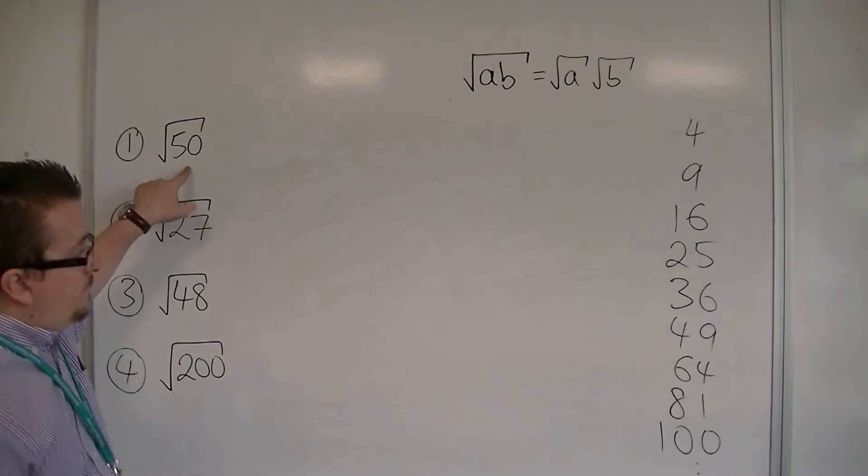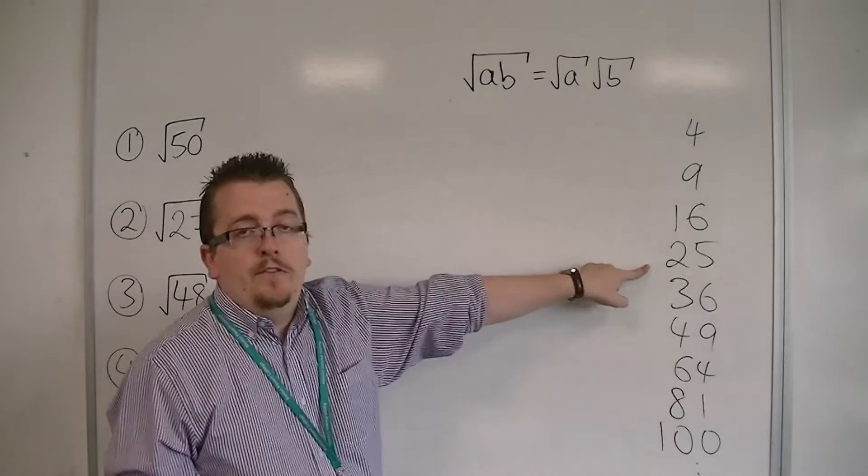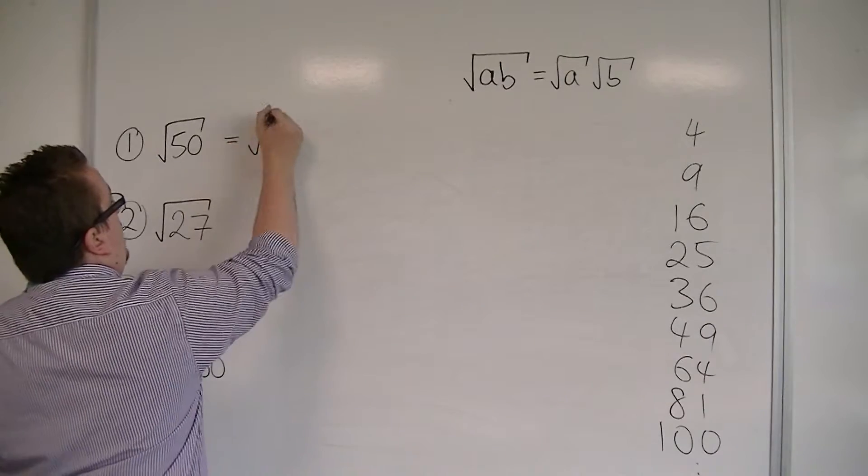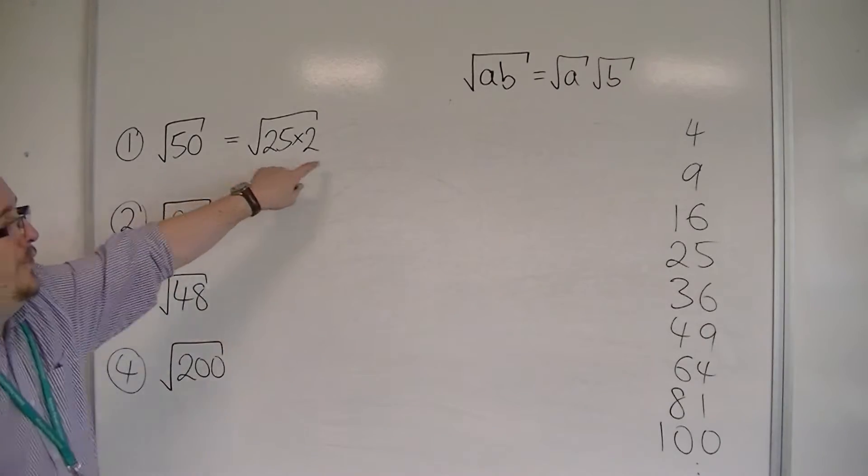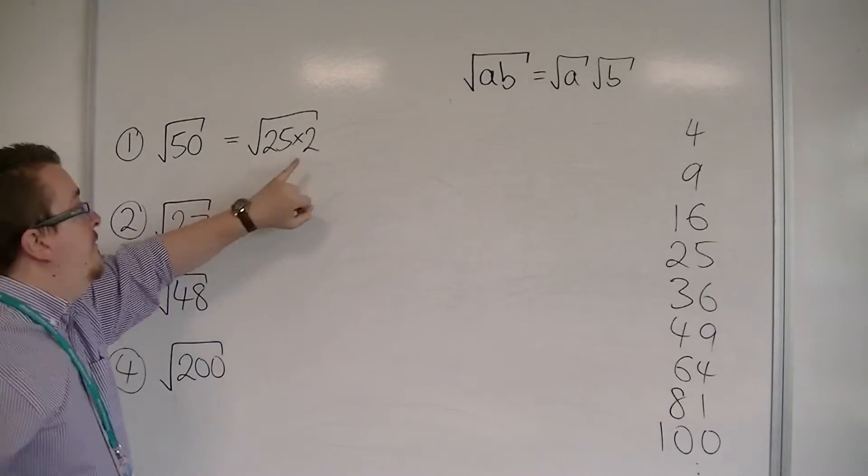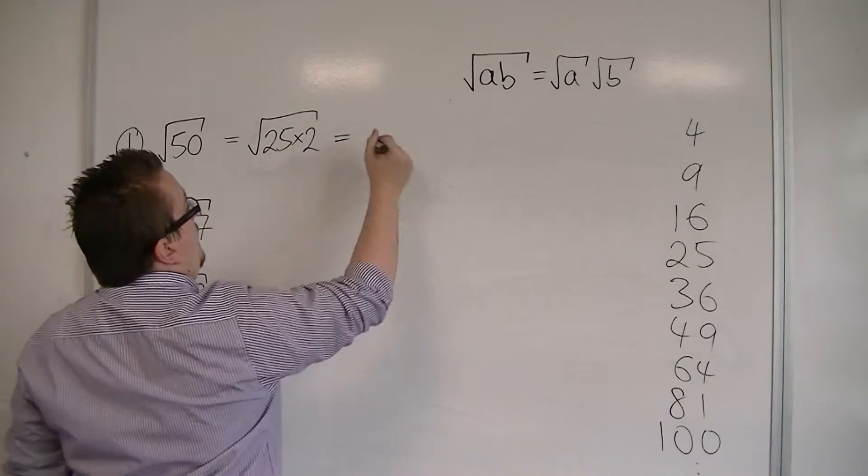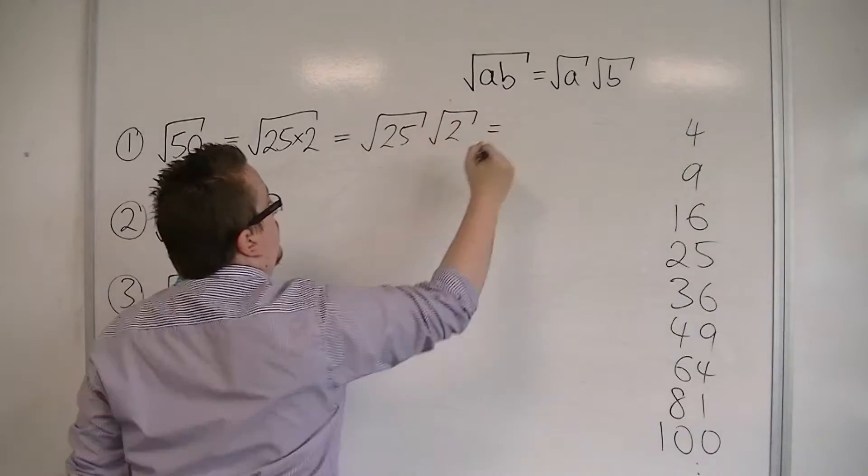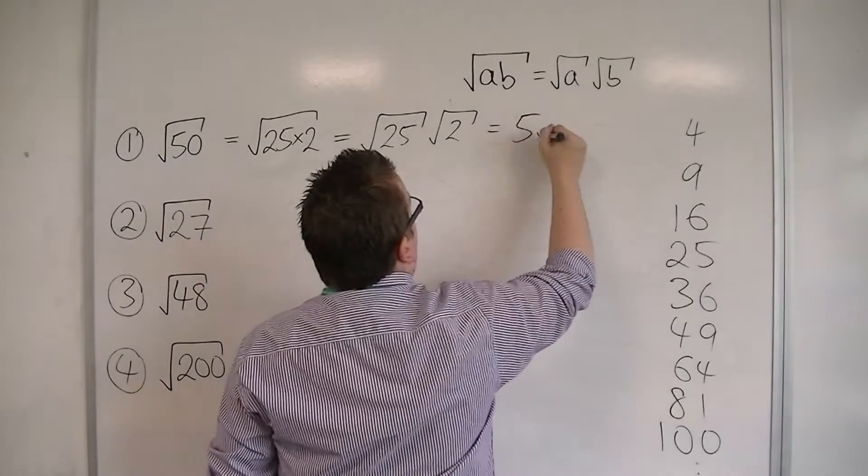So 50, if we look down our list, 25 is a factor of 50, so I can write the square root of 50 as the square root of 25 times 2. So 25 is the square number that I'm looking for, and the 2 is what I need to multiply 25 by to get 50. That allows me to then split this into the square root of 25 times the square root of 2. The square root of 25 we know is 5, so I can just write it as 5 root 2.